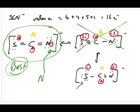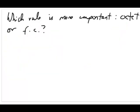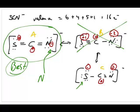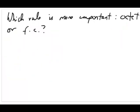Structure C still contributes to the experimental structure, but to a smaller percentage. Now I want to discuss the last point: which rule dominates — the octet rule or the formal charge rule? In the BrO3⁻ example, we allowed structures that violate the octet rule and then used formal charge to pick the best. In the SCN⁻ example, we required all structures to obey the octet rule. So the question is: do we always follow the octet rule, or always follow the formal charge rule?